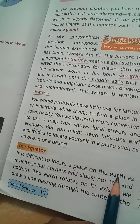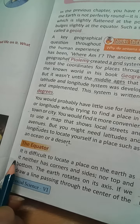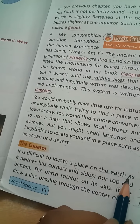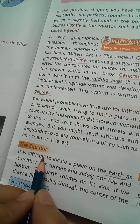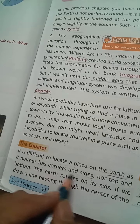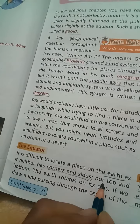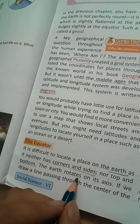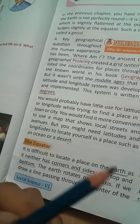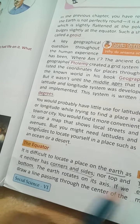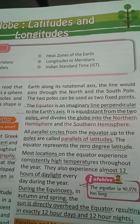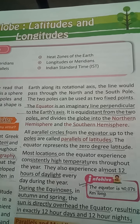It is difficult to locate a place on the earth as it has no corners or sides. The earth rotates on its axis. If we draw a line passing through the center of the earth along its rotational axis, the line would pass through the north and the south pole.